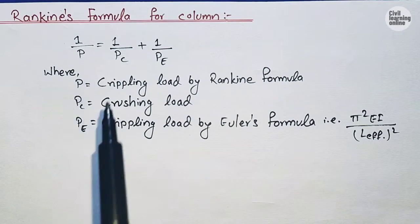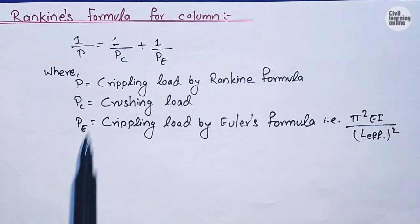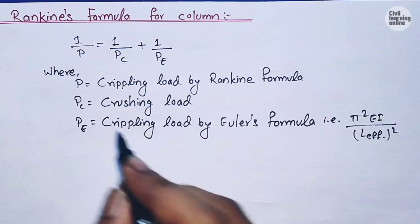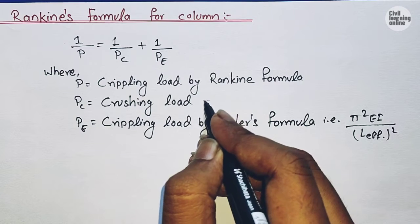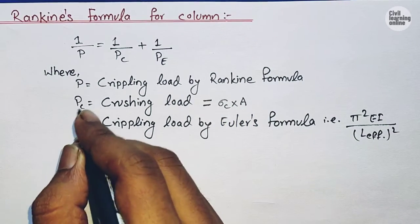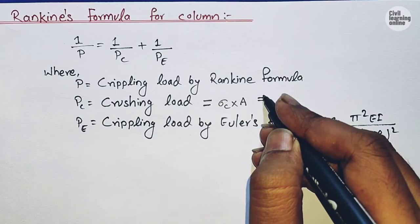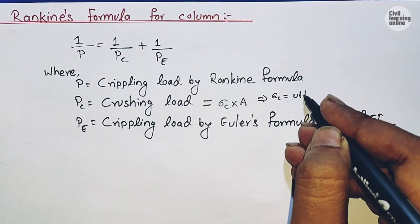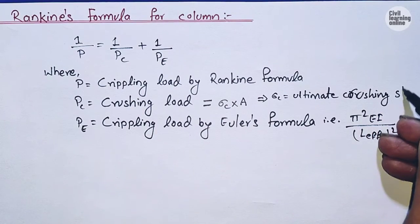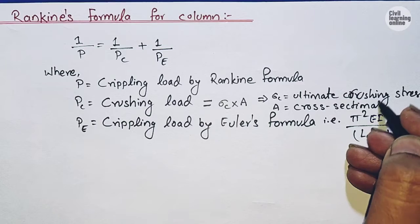We need to derive and rewrite this equation in the form of P using the effective span and the crippling load. Here PC is the crushing load and PE is the crippling load using Euler's formula. The crushing load PC equals the crushing stress multiplied by the area, where sigma_C is the ultimate crushing stress and A is the cross-sectional area of the section.